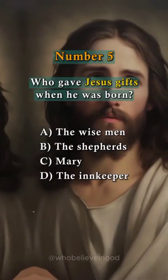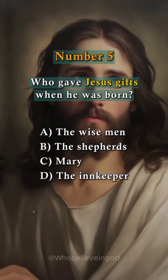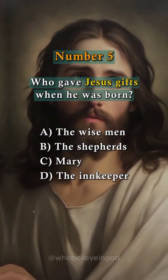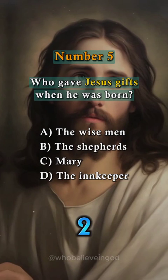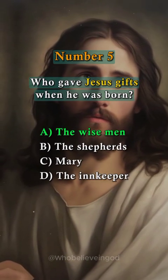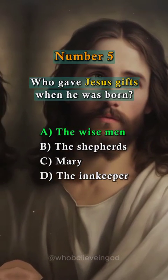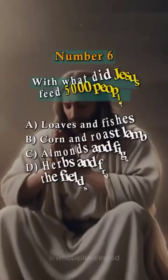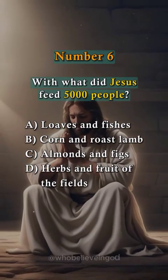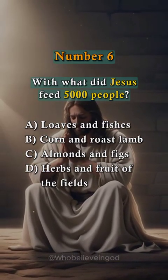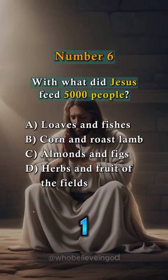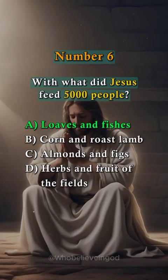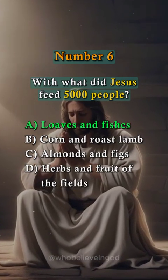Number five: who gave Jesus gifts when he was born? Answer: the wise men. Number six: with what did Jesus feed 5,000 people? Answer: loaves and fishes.